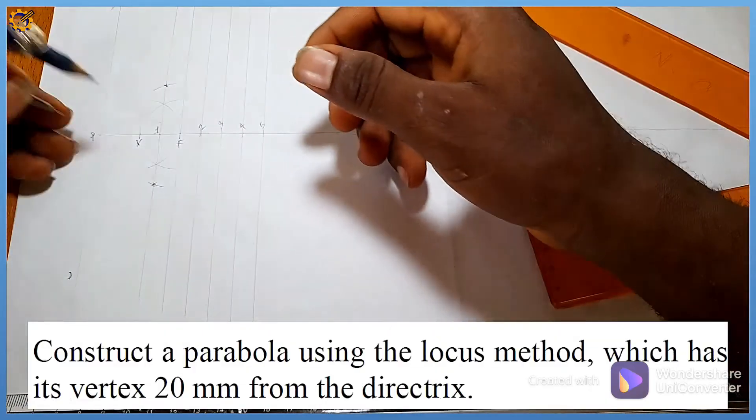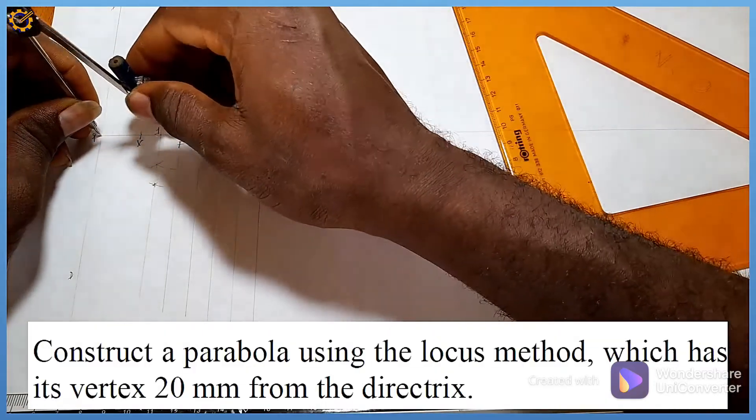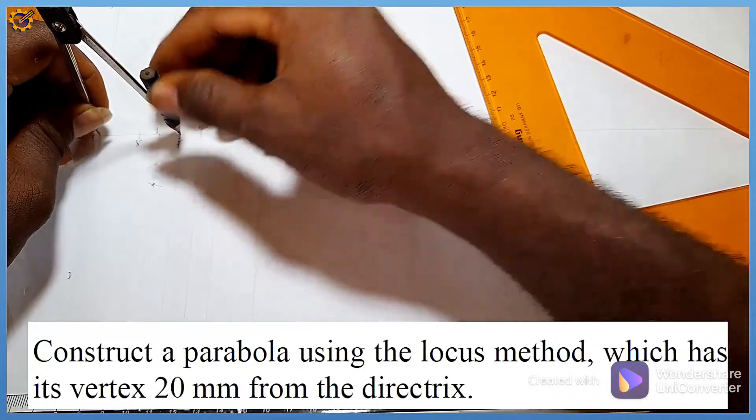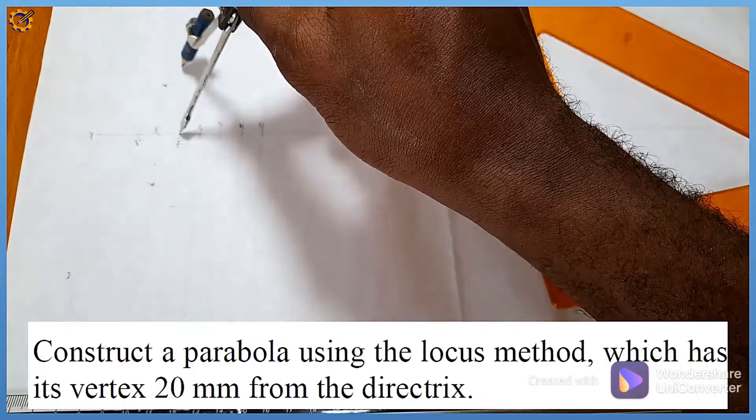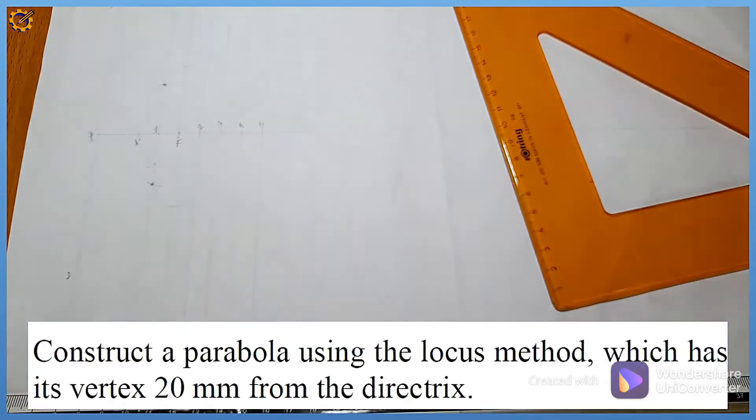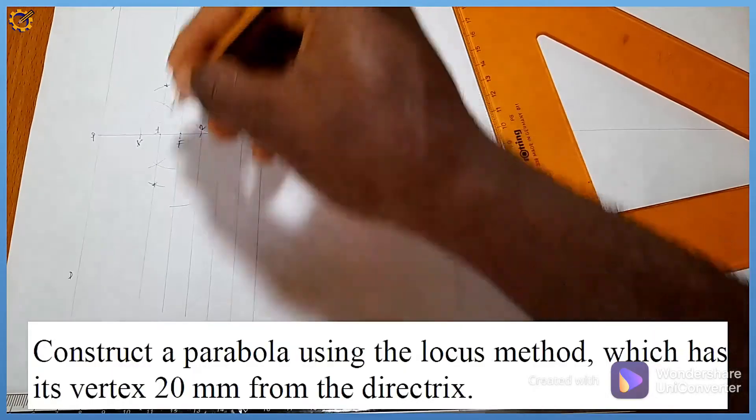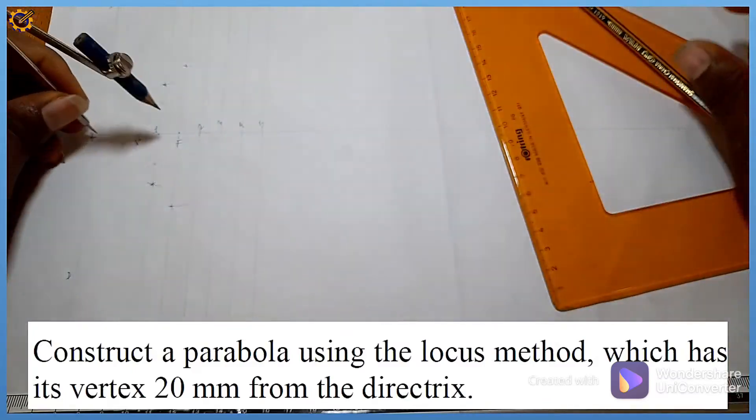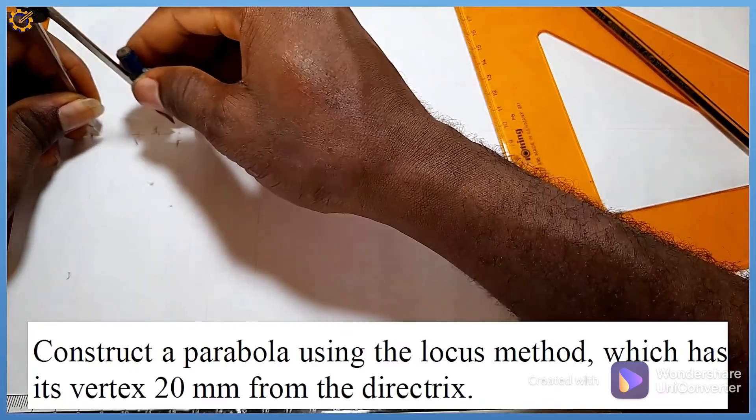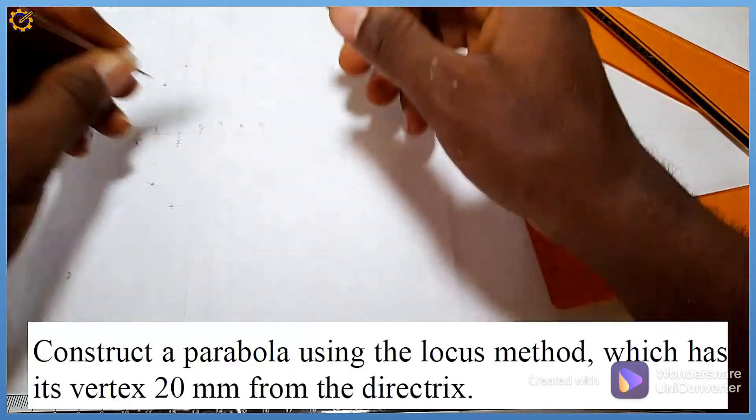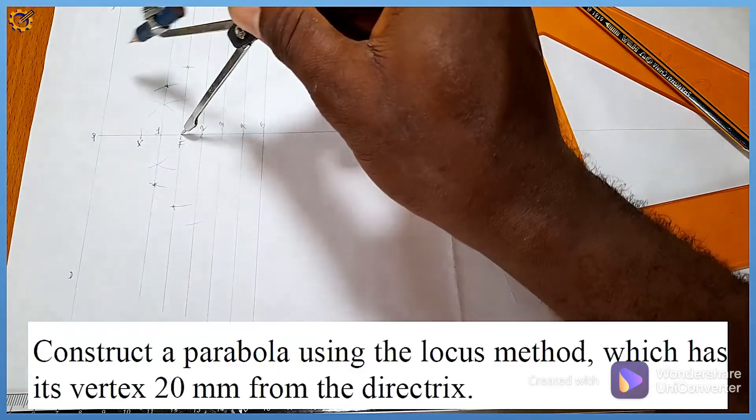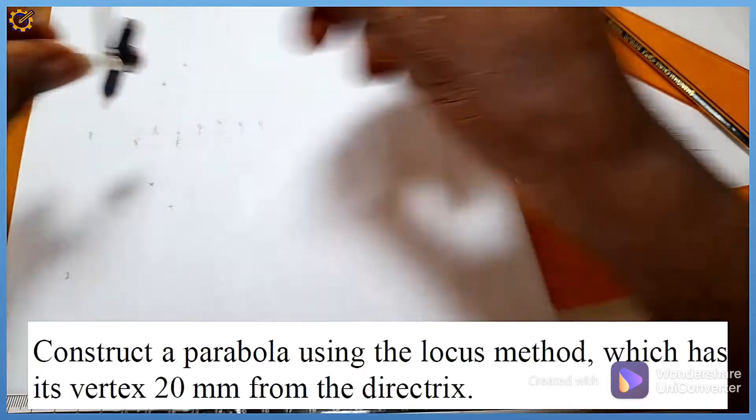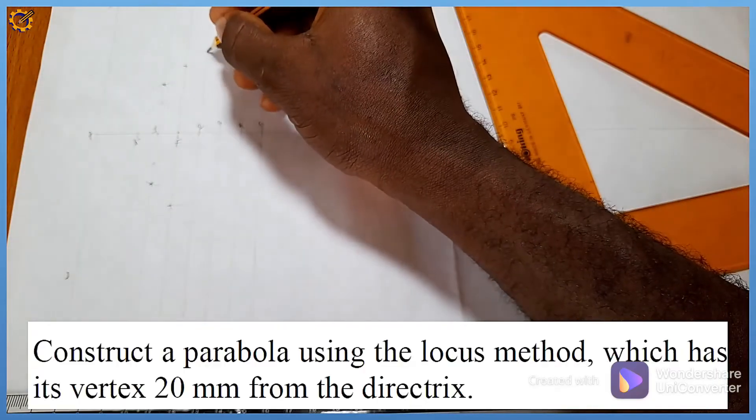I pick my compass, I pick PF. With PF at center F I strike my arc up and down, having the intersection right here and here. I pick P to 2, at center F I strike my arc on the vertical line of point 2, having my intersection right here and here.